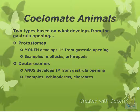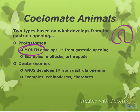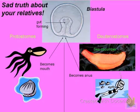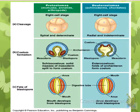Coelomate animals go even more in depth because they are based on what develops from the gastrula's opening. So gastrulas have this opening. Protostomes — the mouth develops from this opening, and these are things like mollusks and arthropods, which are less complex. Deuterostomes — the anus develops from this opening, and these are more complex things like anything with a vertebrate, like us and sea stars. Your mouth leads to your gut and then your gut leads to your anus, so it depends on whether the mouth or anus forms first from that opening.